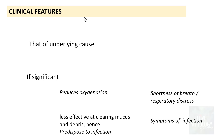Clinically, features are those of the underlying cause — symptoms of obstruction, tumor, or pleural effusion depending on the etiology. If atelectasis is significant, reduced oxygenation leads to shortness of breath or even respiratory distress. The atelectatic lung is also less effective at clearing mucus and debris, making it very prone to secondary infections, which can present as signs of inflammation or infection.